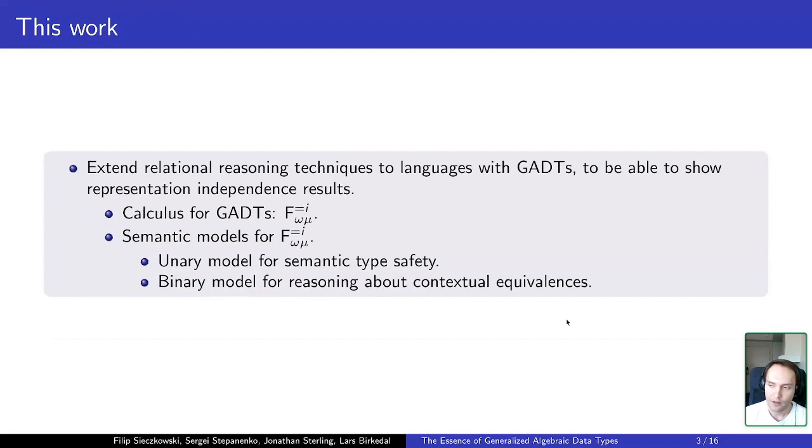So the way we approach the problem was two-stage. We firstly came up with a calculus which is empirically good enough to express GADTs, and after that we tried to construct semantical models for this calculus. So let's start with the calculus. It's an extension of a system omega with recursive types, equalities and injectivity rules for types. And given this calculus we constructed two models: one to reason about semantical type safety and another one to reason about binary properties, for example representation independence or to prove some free theorems for the calculus.